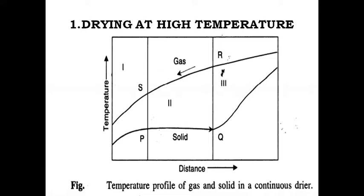In zone two, the temperature of solid remains fairly constant, that is under isothermal conditions, and the surface and unbound moisture are evaporated. Unbound moisture is water that evaporates easily with a normal moisture balance — there is no pressure on such water. Point Q corresponds to the critical moisture content.